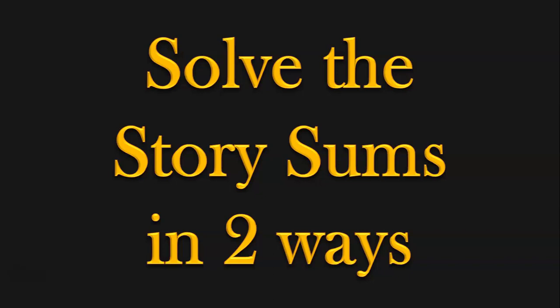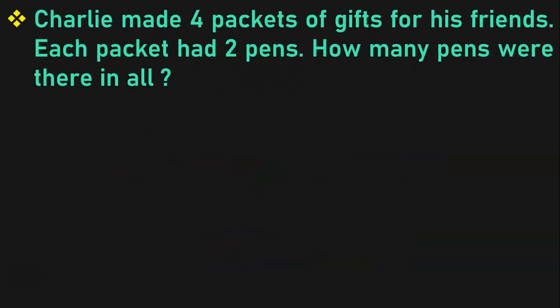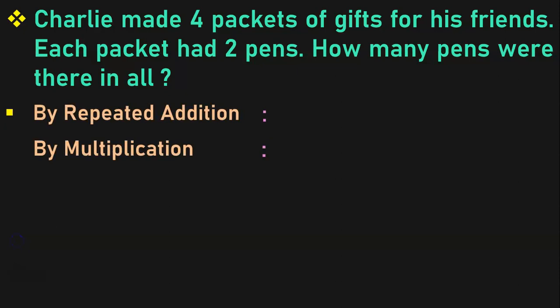We solve the story sums in two ways. Let us see and understand it with the help of examples. The first sum that we are going to see is: Charlie made 4 packets of gifts for his friends. Each packet had 2 pens. How many pens were there in all? Multiplication word problems can be solved in two methods: one is by repeated addition, another is by multiplication.